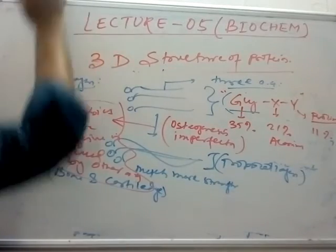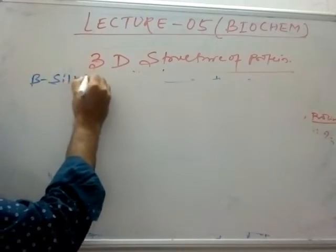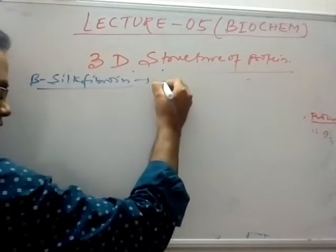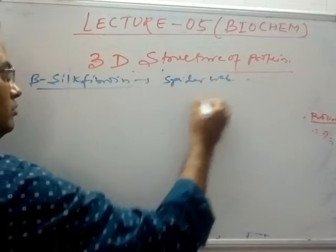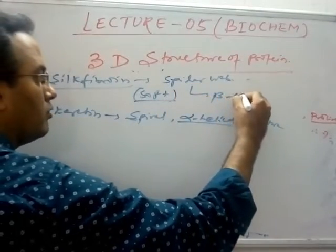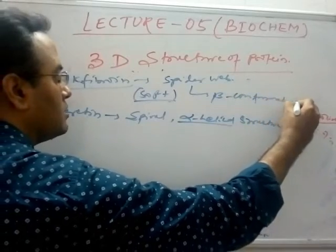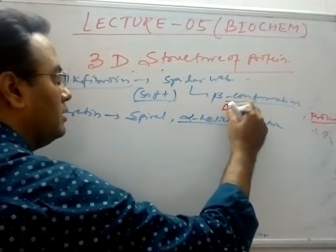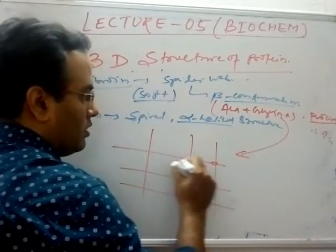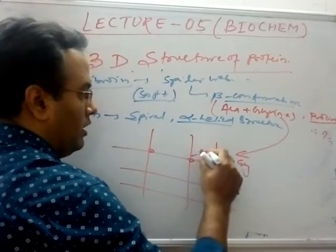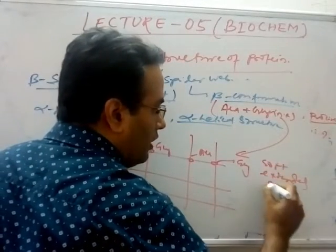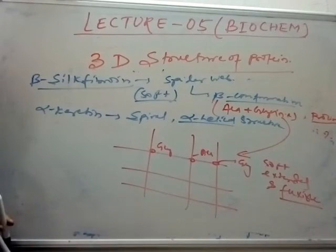Moving to the third type, which is the beta structure — also called silk fibroin — it is rich in beta-sheet confirmation and is present in spider webs. Silk fibroin is very soft; in this beta confirmation, alanine and glycine are very common. It forms a sheet-like, very extended structure.